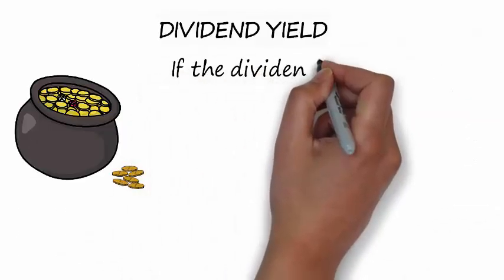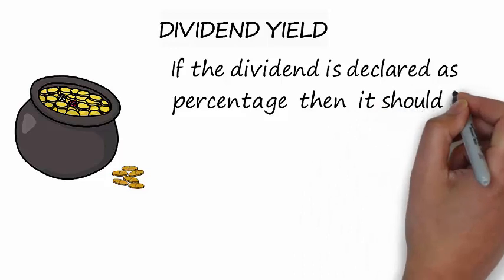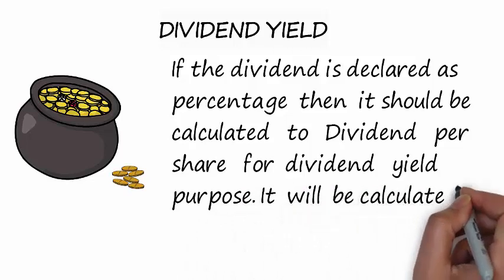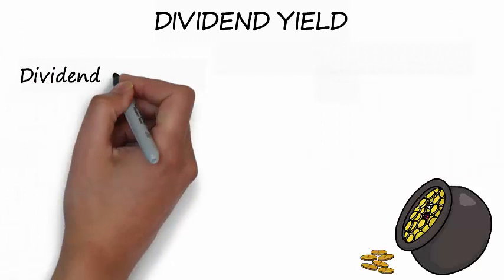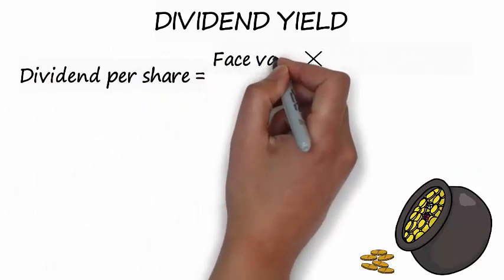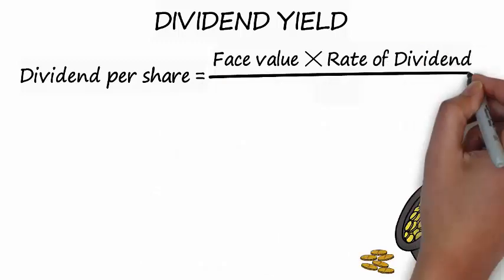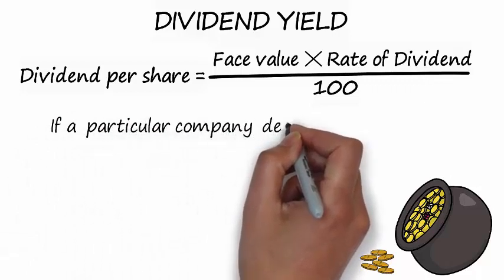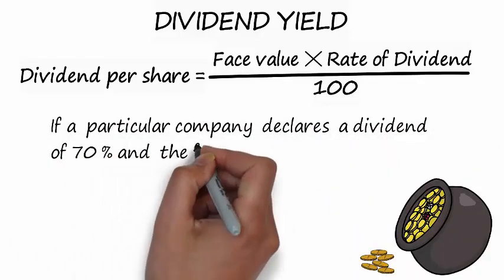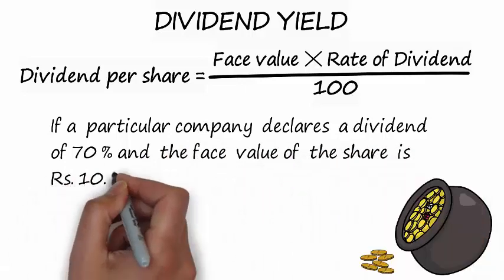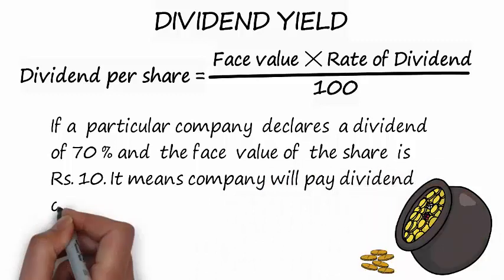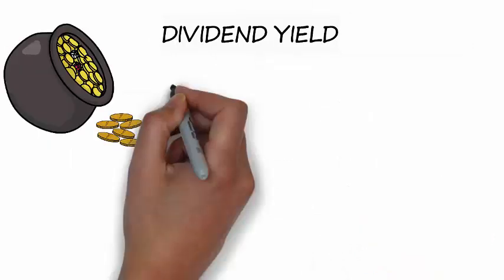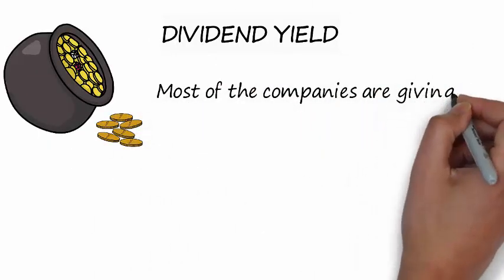If the dividend is declared as a percentage, it should be calculated to dividend per share for dividend yield purposes, using the face value of the share. Dividend per share equals face value multiplied by rate of dividend divided by 100. For example, if a company declares a dividend of 70% and the face value of the share is rupees 10, the company will pay dividend of rupees 7 per share: 10 × 70 ÷ 100 = 7.